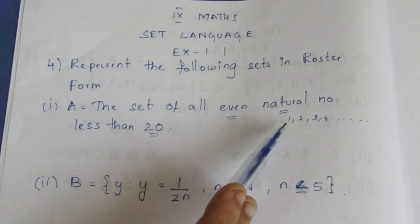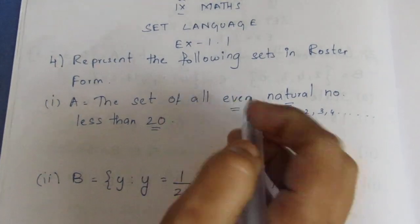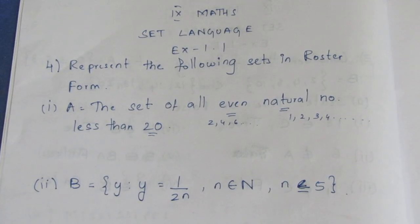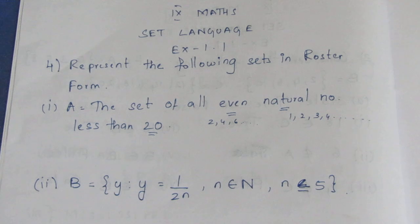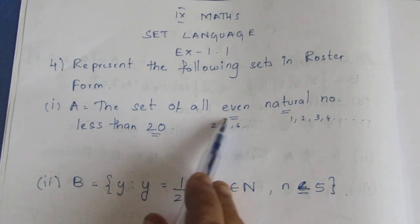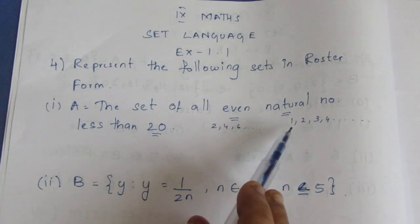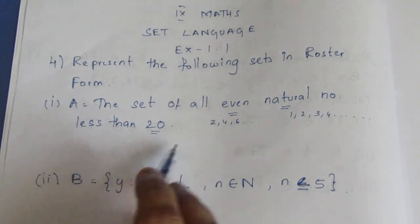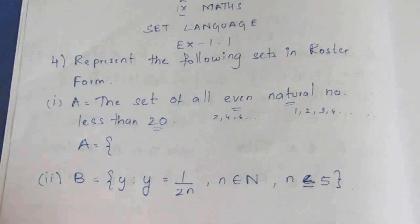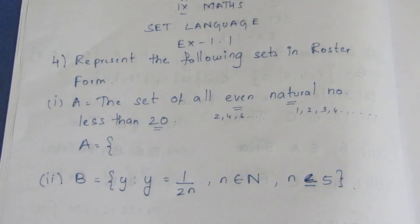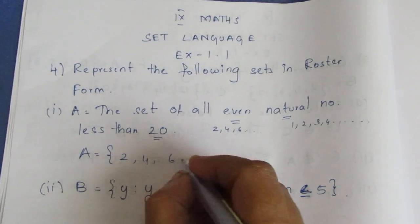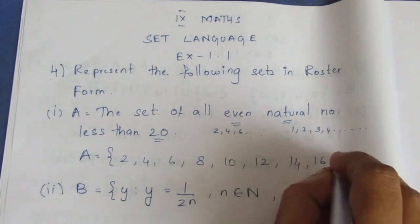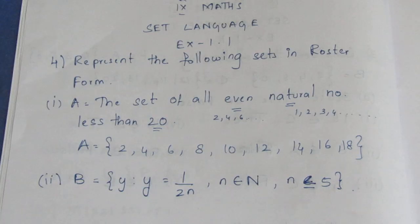Natural numbers are 1, 2, 3, 4 and so on. So the even ones are 2, 4, 6. We will be able to write 2, 4, 6, 8 — these are the 2 times tables. All these numbers are even numbers. Even natural numbers less than 20 are: 2, 4, 6, 8, 10, 12, 14, 16, 18. These are the numbers less than 20.